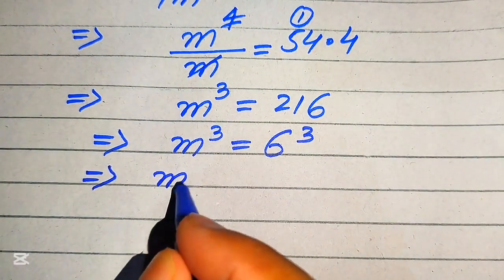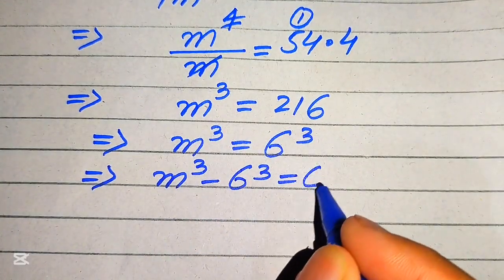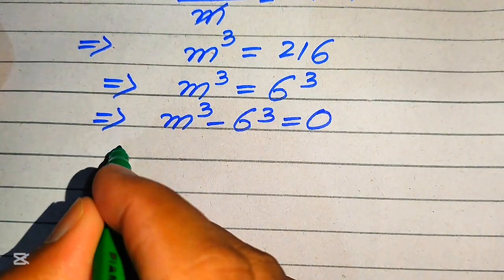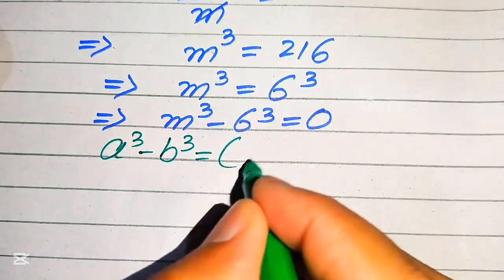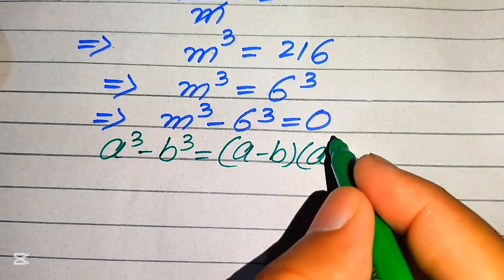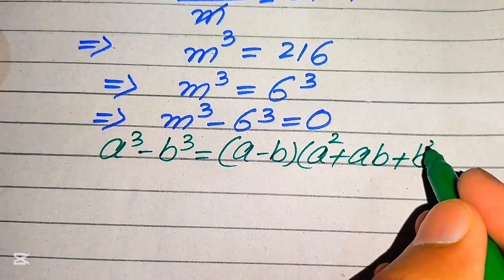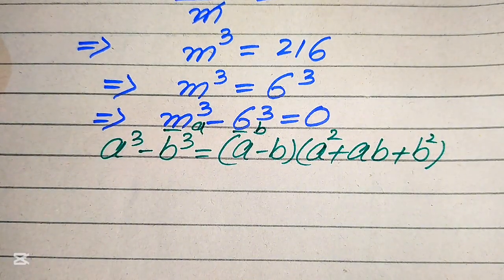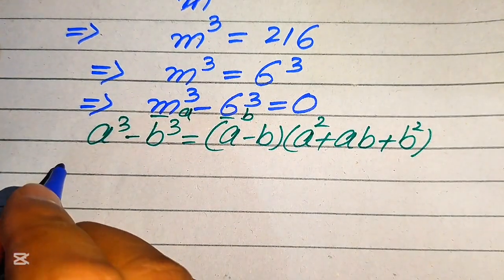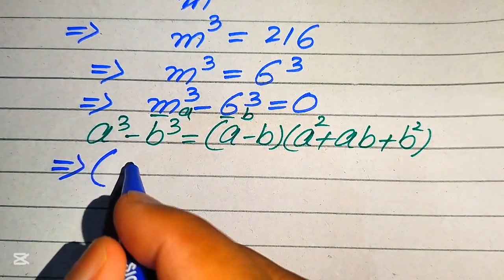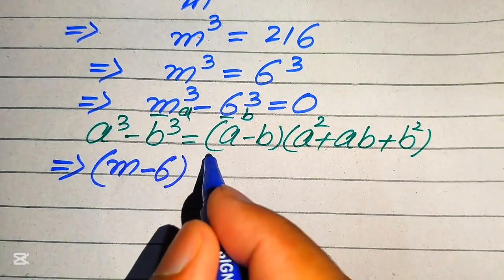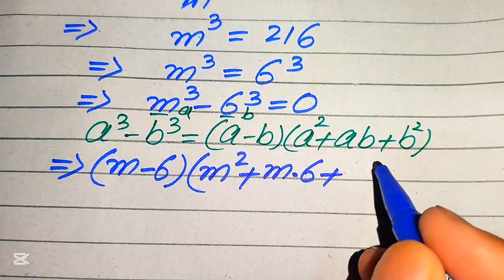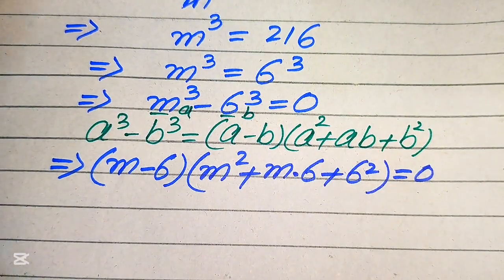We move 6 cubed to the left-hand side, giving us m cubed minus 6 cubed equals 0. We apply the difference of cubes formula: a cubed minus b cubed equals (a minus b)(a squared plus ab plus b squared). Here a is m and b is 6, so we write (m minus 6)(m squared plus m times 6 plus 6 squared) equals 0.